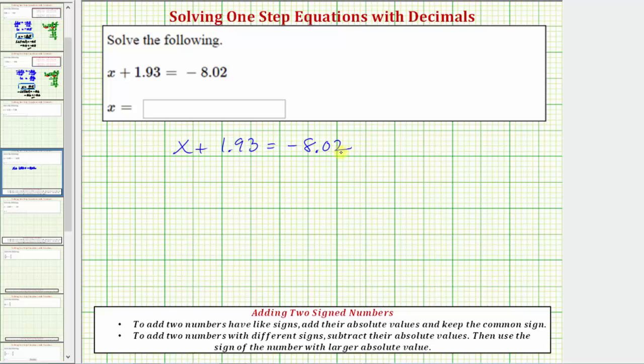The solution to the equation is the value of x that makes the sum on the left equal to negative 8.02. To solve for x, we need to isolate x on one side of the equation. Because x is on the left side of the equation, our solution will be in the form of x equals some value that makes this sum equal to negative 8.02.